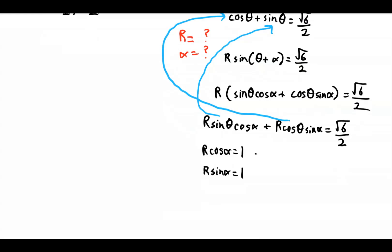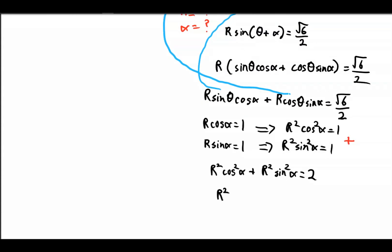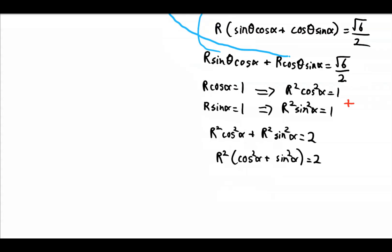Squaring these two equations gives us r squared cos squared alpha equal to 1 and r squared sin squared alpha equal to 1. Adding them together: r squared cos squared alpha plus r squared sin squared alpha equals 2. Factoring out r squared gives r squared times the quantity cos squared alpha plus sin squared alpha equals 2. Since cos squared plus sin squared equals 1, we get r squared equals 2, so r equals root 2.